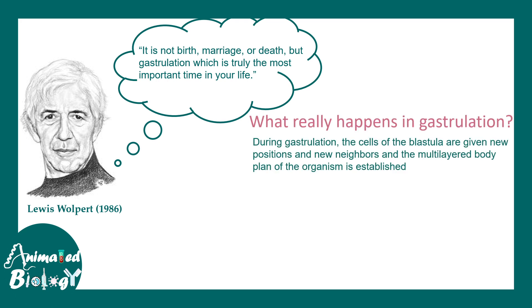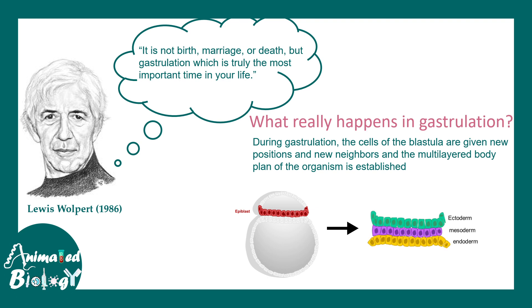During the gastrulation process, the cells of the blastula are given new positions. They migrate into a new neighborhood in a very coordinated fashion, and that's the key time to establish body axis and different germ layers. The cells of the epiblast are reorganized in a coordinated fashion to give rise to layers like endoderm, ectoderm, and mesoderm. In short, that is the process of gastrulation.